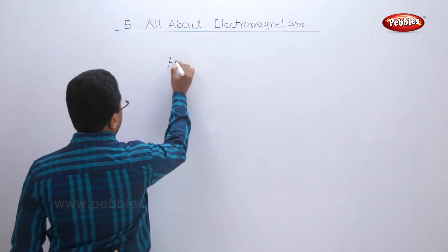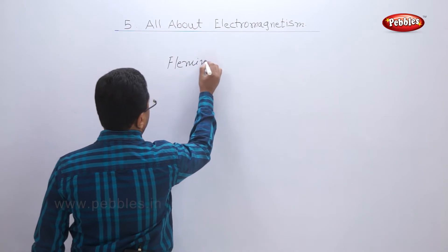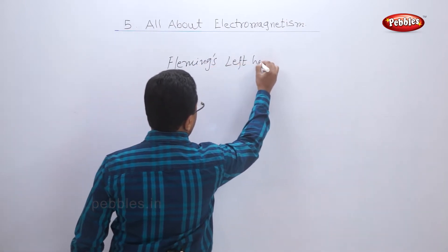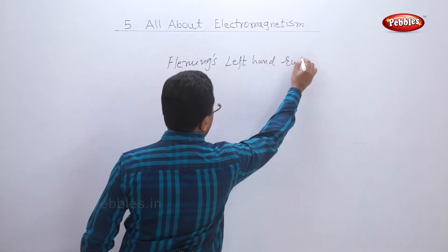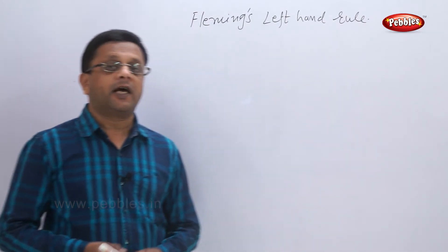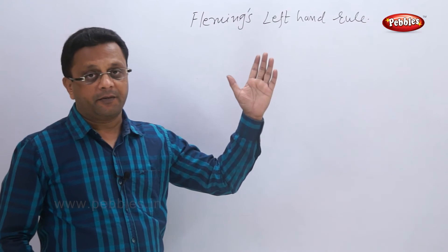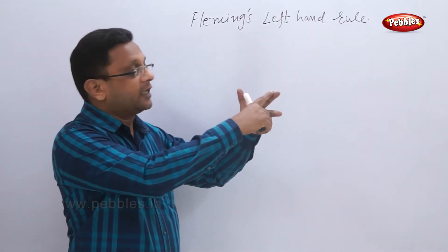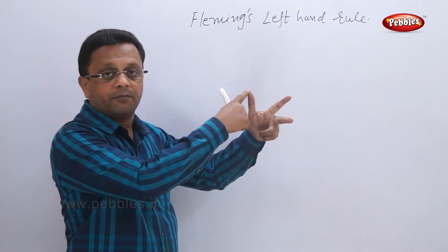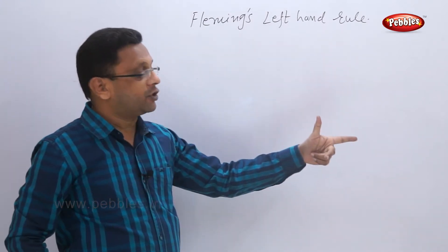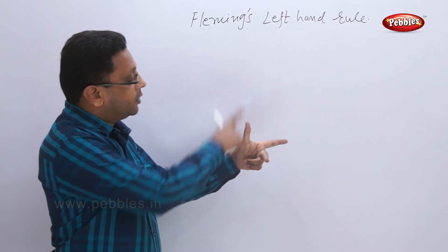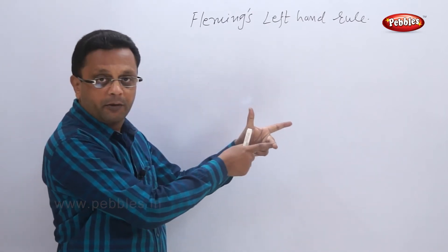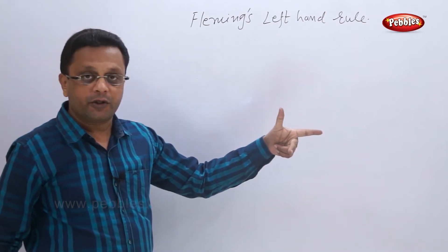The Fleming's left hand rule says that if I take my left hand and use these three fingers—index finger, middle finger, and thumb—at right angles to each other, perpendicular to each other.